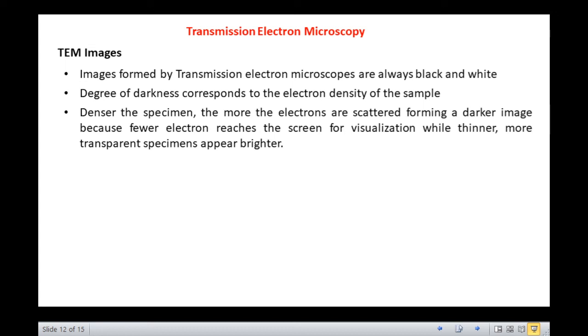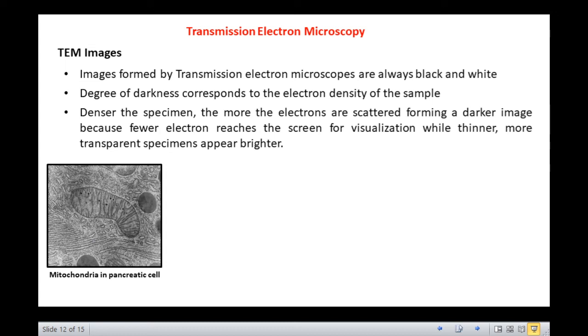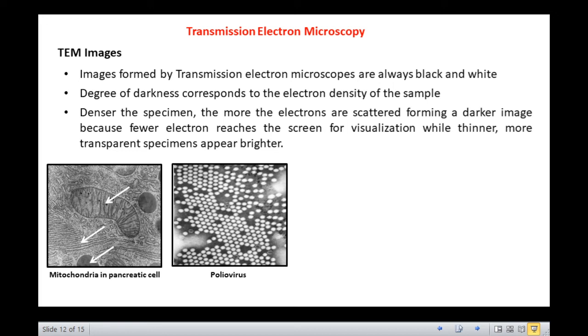Let us see a few representative photographs obtained by transmission electron microscopes. This is a pancreatic cell. Observe the mitochondria, vacuoles, and do not miss the Golgi bodies. This is poliovirus, one of the smallest viruses, about 30 nanometers in diameter.